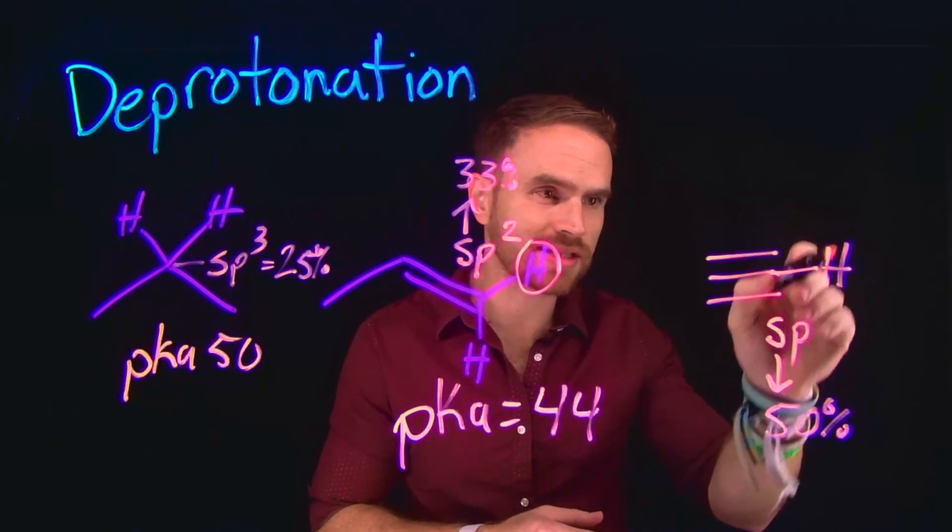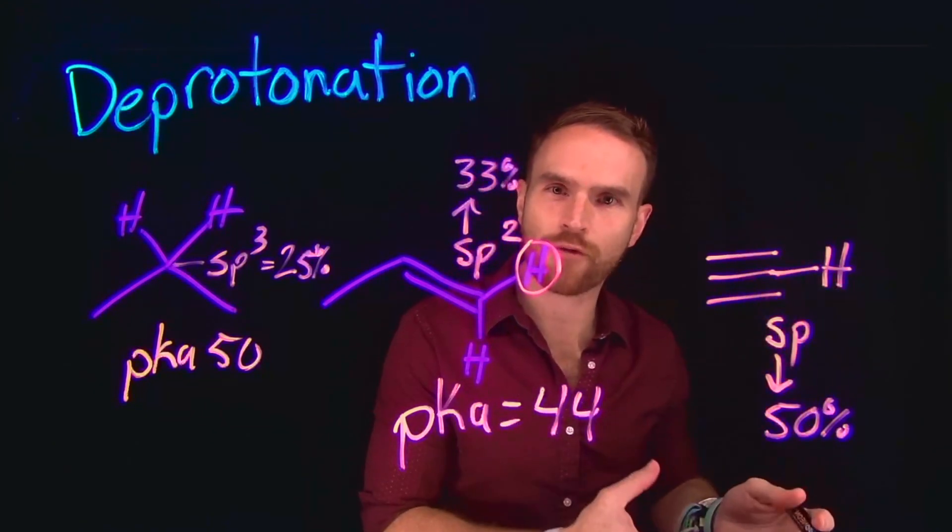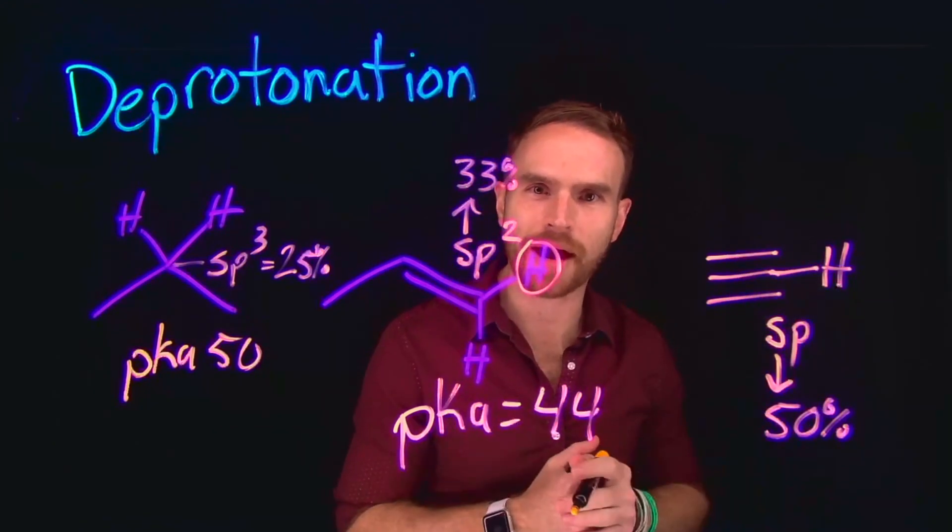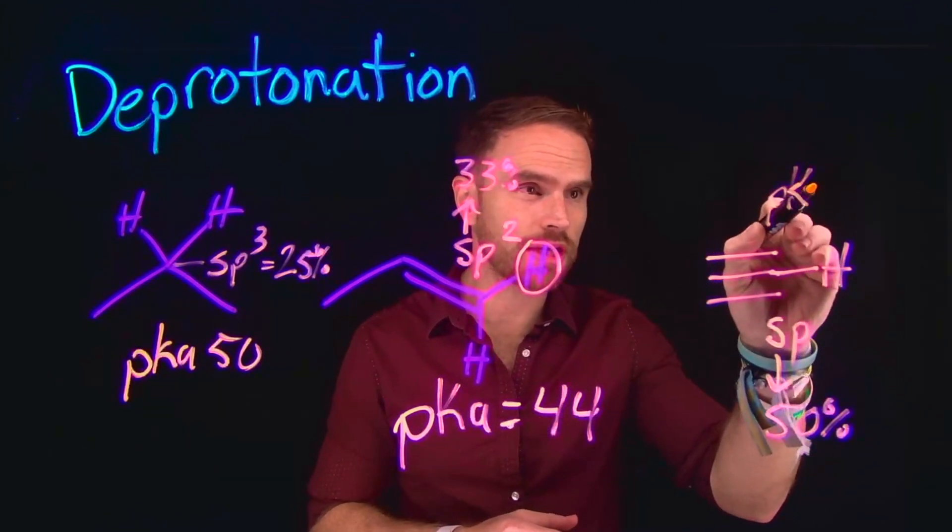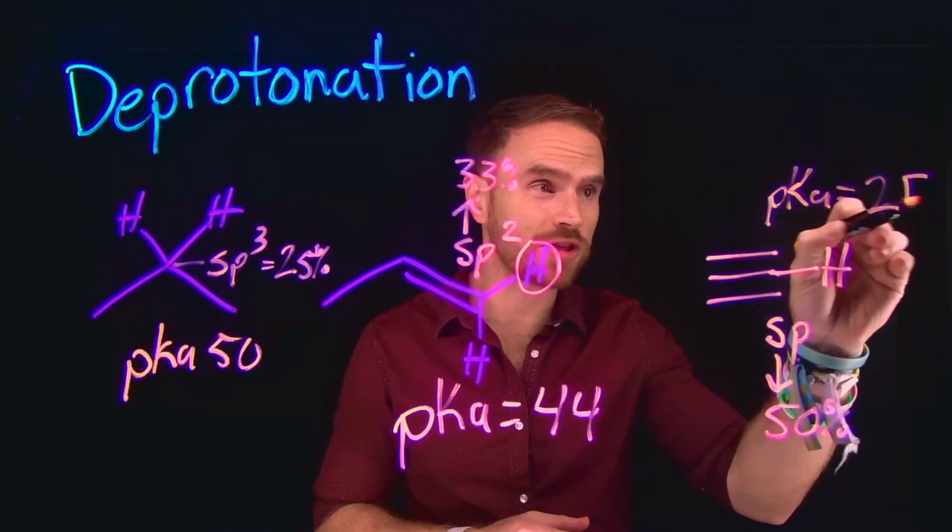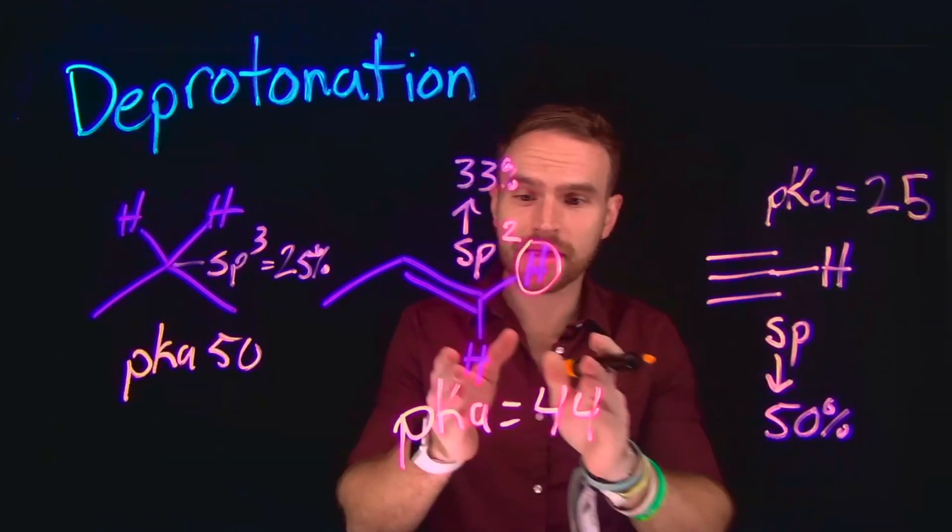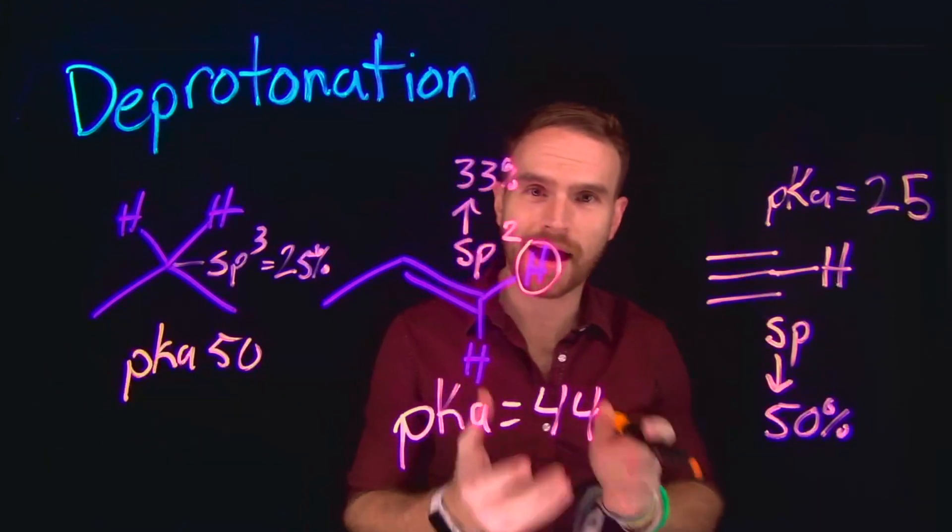So as we're increasing the S character from 25% to 33% and then 50% for this carbon, this is going to make this hydrogen much more acidic and therefore more likely to be deprotonated by a base. In fact, the pKa value of this carbon hydrogen atom is going to be about 25, which is considerably lower than an alkene or an alkane hydrogen.